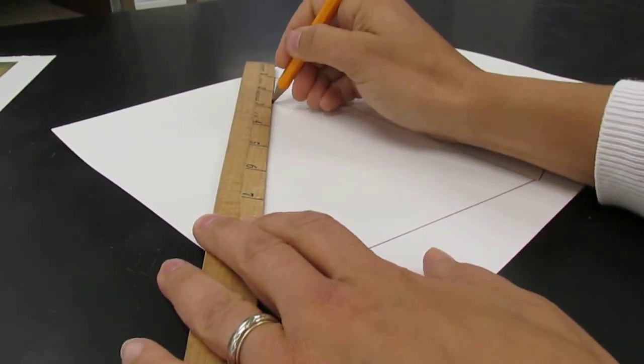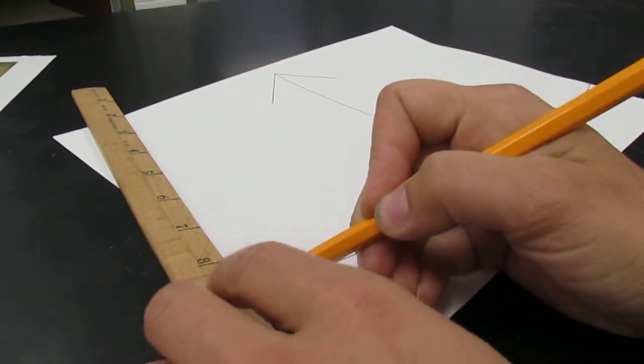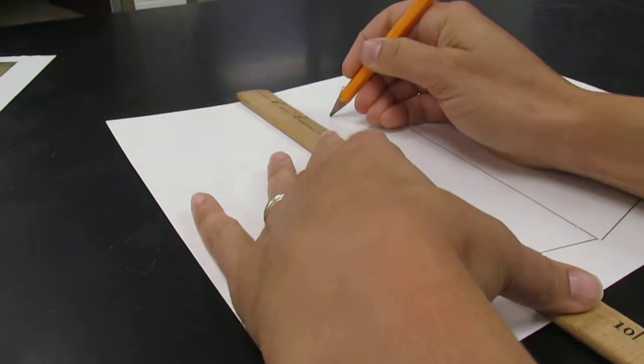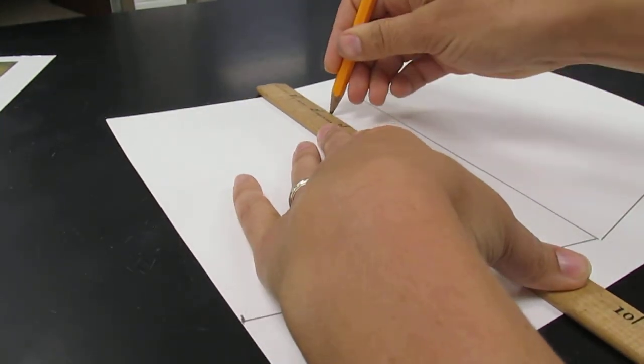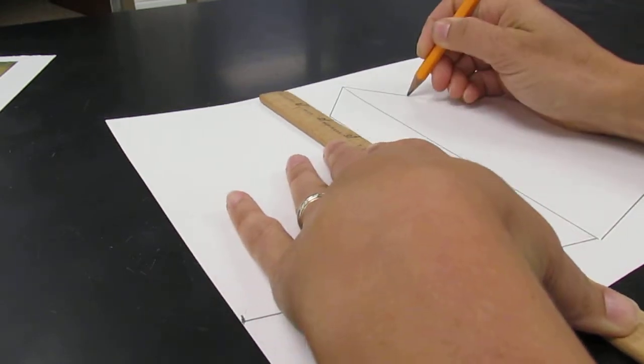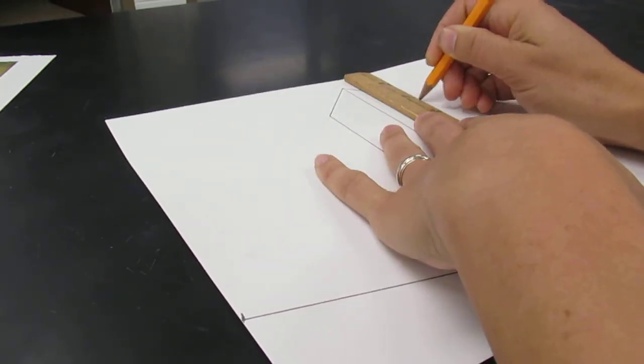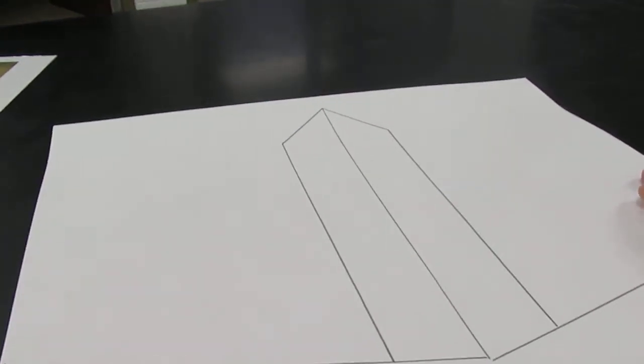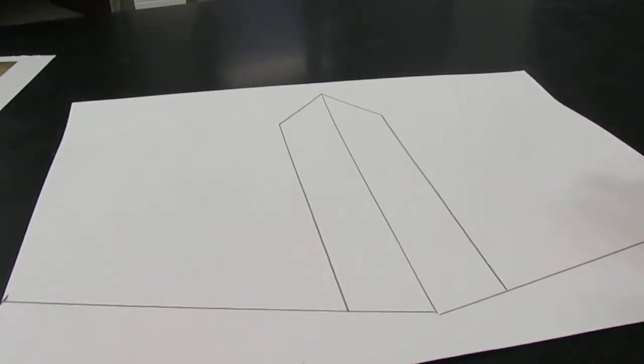So my ruler was touching the vanishing point on both of those. Now I'm going to just take these and make my line vertical. The vertical lines are not to the vanishing point; those need to be straight up and down vertical. Now what I have is my very first building.